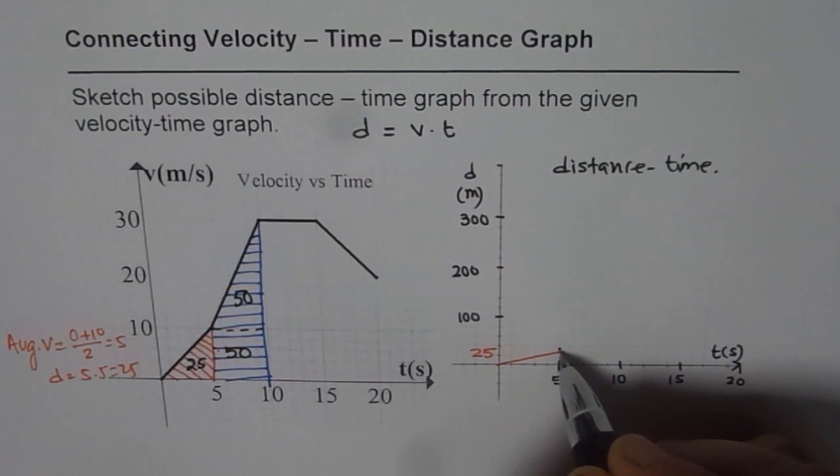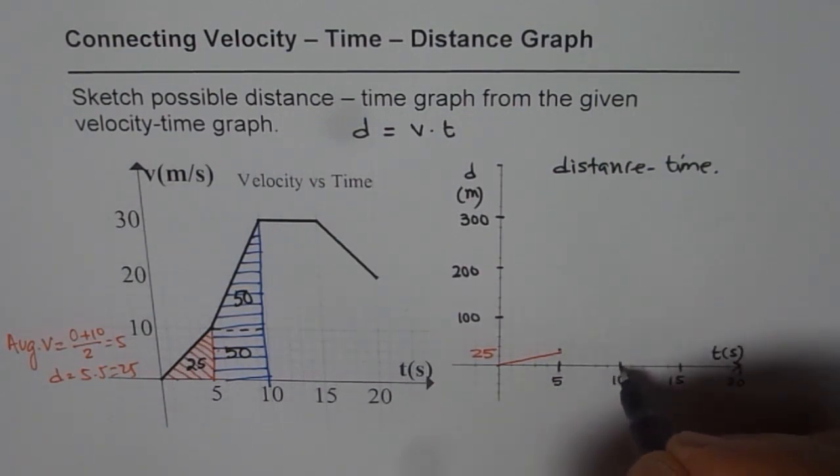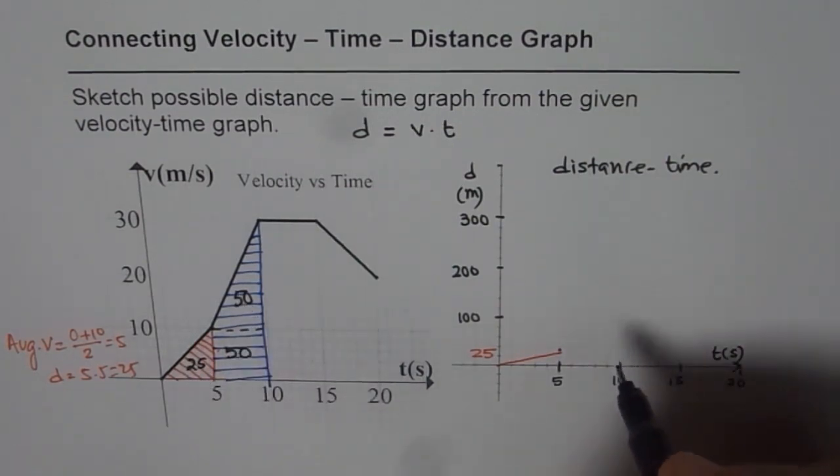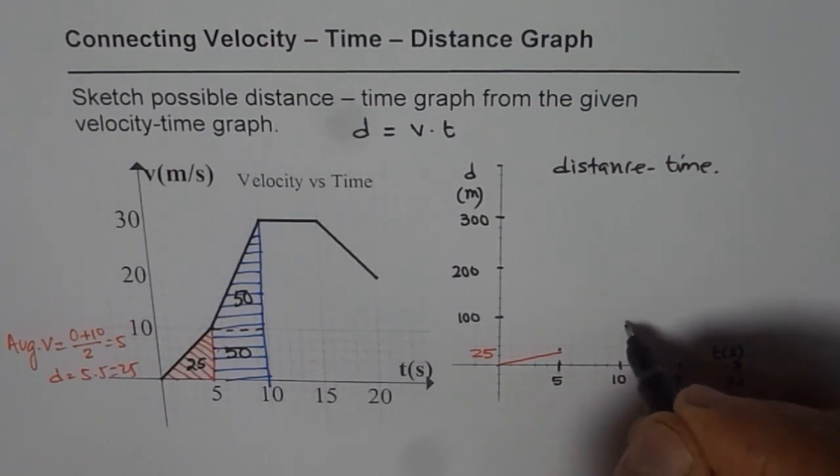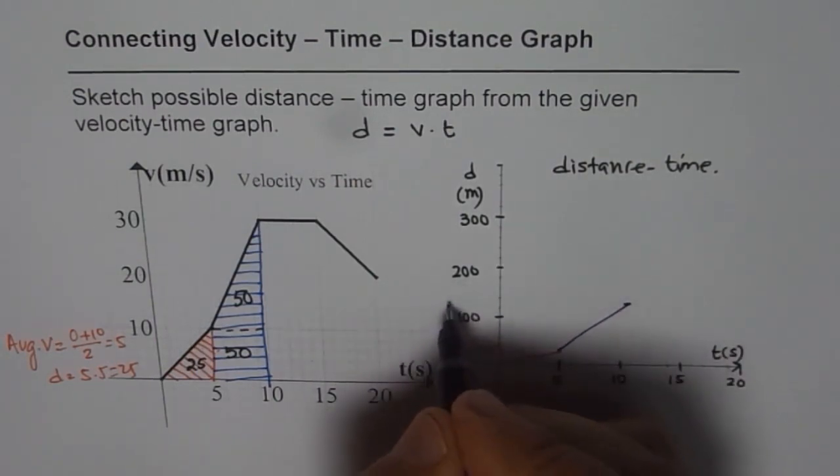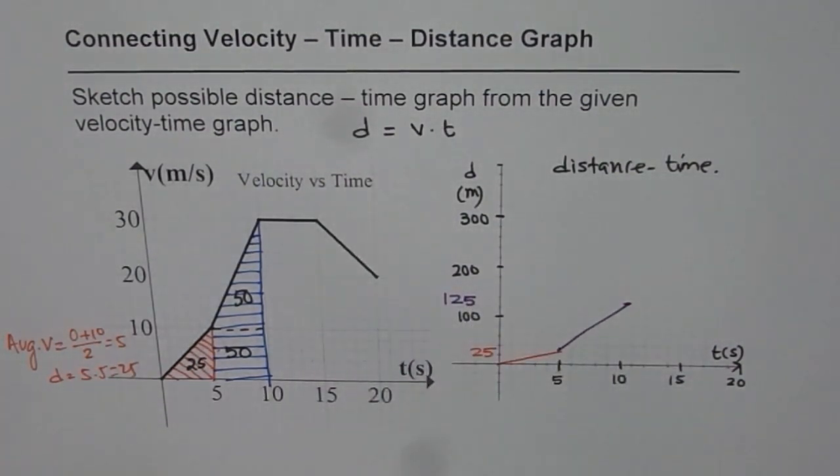So from this point we cover a distance of 100 units. So at the end of 10 seconds, we are placed at 125. So at the end of this, we are at 125. So that is the point for us. We will join this. So this point is at 125.